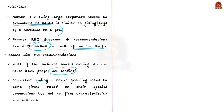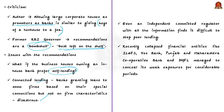If loans are given based on special connections, it will be disastrous. Even though the IWG recommendations state that enough measures shall be taken to prevent connected lending and exposures between banks and financial and non-financial group entities, the author feels this might not be practical. Even an independent committed regulator with all information finds it difficult to stop poor lending. We have already seen many examples where financial entities collapsed, like IL&FS, Yes Bank, Punjab National Bank, Maharashtra Cooperative Bank, and DHFL — all of which concealed their weak exposures for considerable periods.